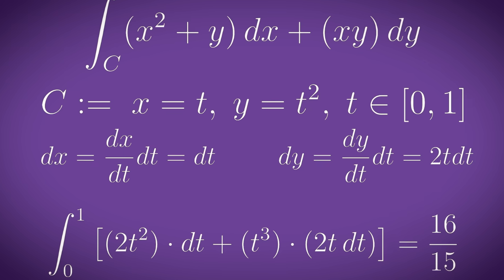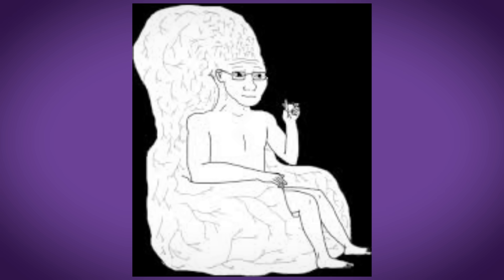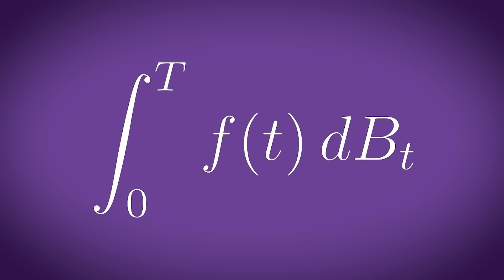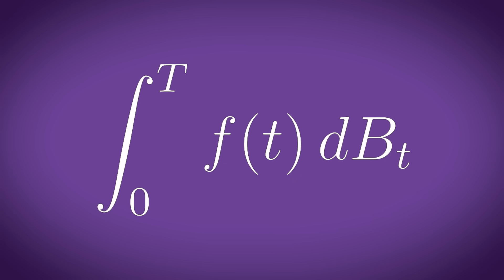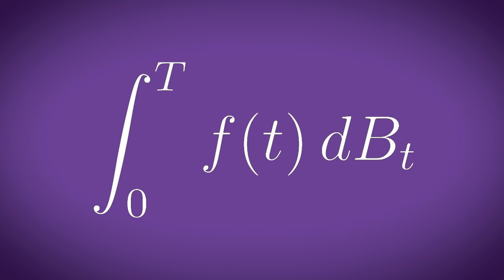15. Ito integral. If you're thinking all of these methods of integration are far too simple for my massive gigabrain, then you should try integrating with respect to Brownian motion. The Ito integral is exactly what you need when your variable just so happens to be making random, unpredictable movements through time and space.